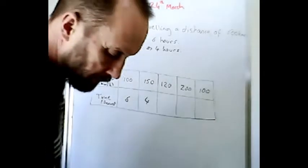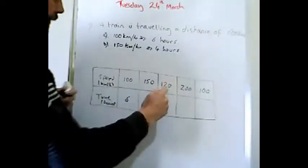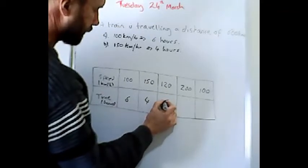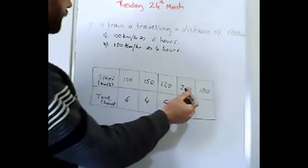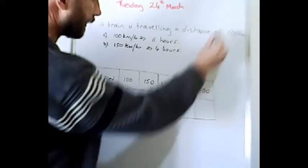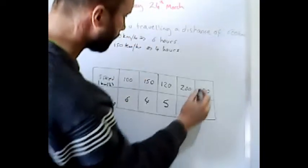We follow the same thing through basically. We do 600 divided by 120 and we get that would be five hours. And we got 200, 600 divided by 200 is three hours, 600 divided by 300...